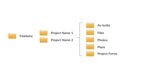Within each project folder, you'll see five folders for each of your project assets: As-built, Files, Photos, Plans, and Project Forms. The Plans and Files folders are the only two folders that sync both to and from Fieldwire, making those folders a true two-way sync.